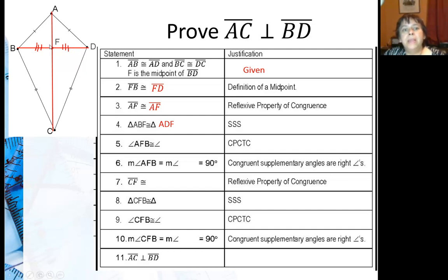Well, then that means that the corresponding angles need to be congruent. AFB, which is this angle right here, must be congruent to AFD by corresponding parts of congruent triangles. Well, I do know that these two angles form a linear pair. And since they're congruent and they're supplementary, they must both be 90 degree angles.